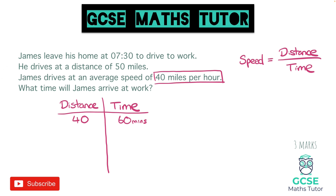This question says he drives a distance of 50 miles, and we need to figure out the exact time it's going to take him to travel those 50 miles. With numbers like this, you might be able to think about a certain proportion of that time. We're going to focus on a non-calculator method. In order to get to that 50 miles, which we'll put at the bottom of our table, we're going to figure out how to get from 40 to 50 and do the same to the other side.